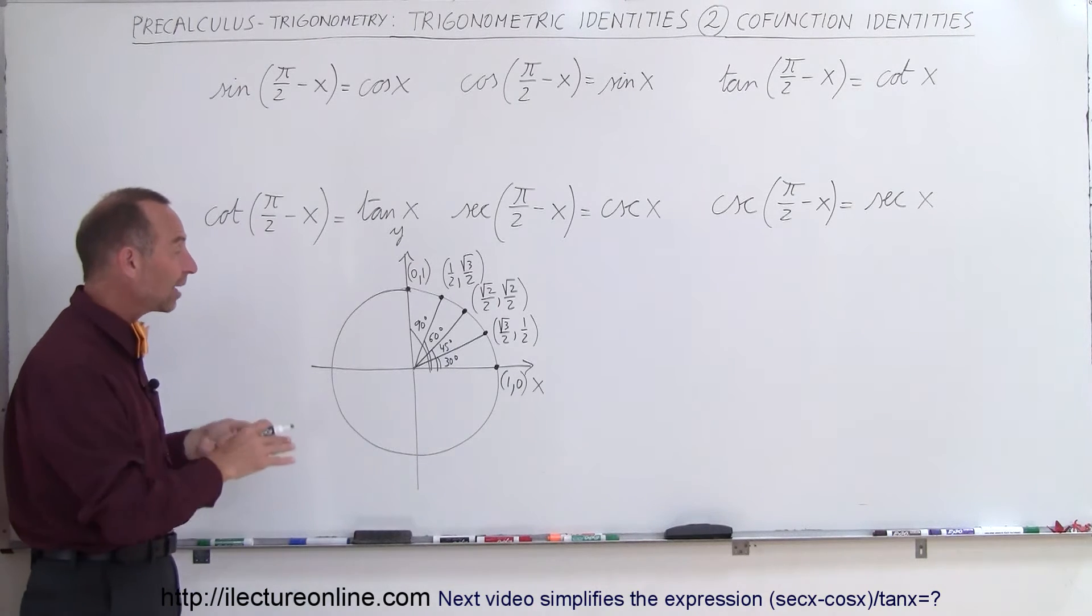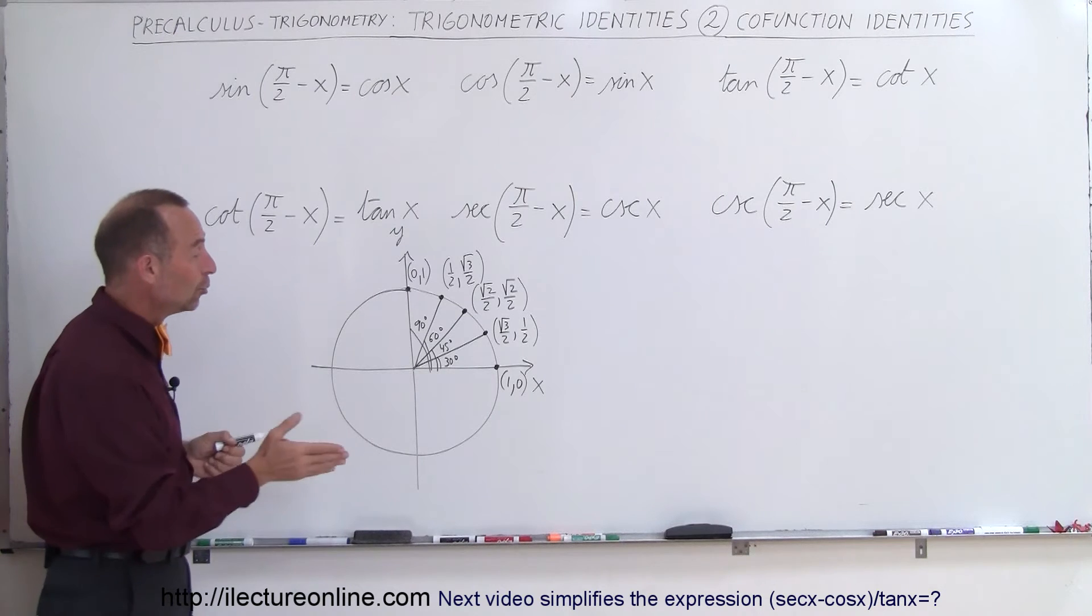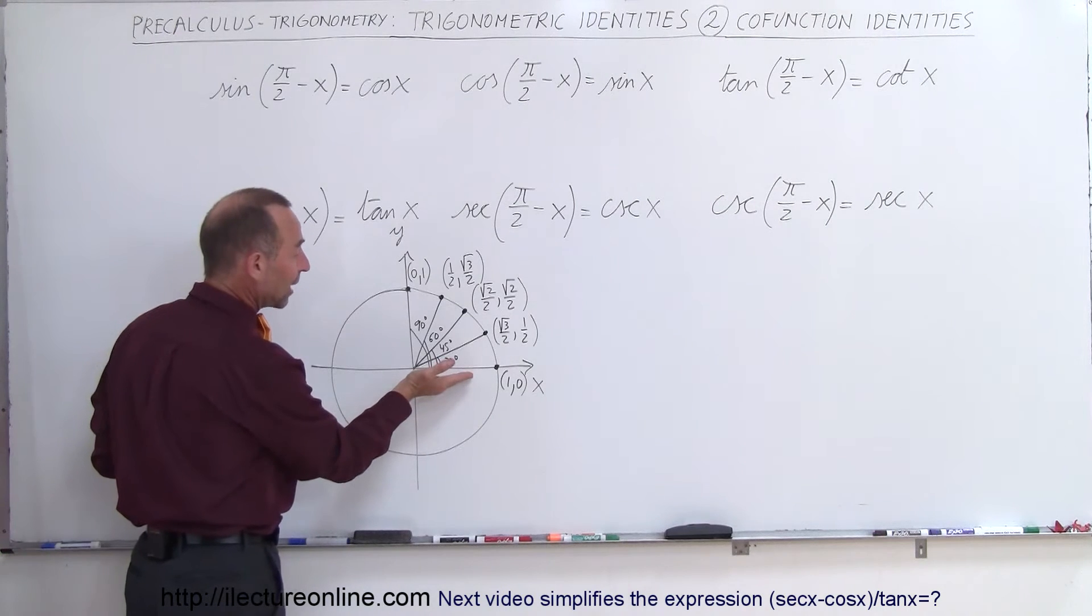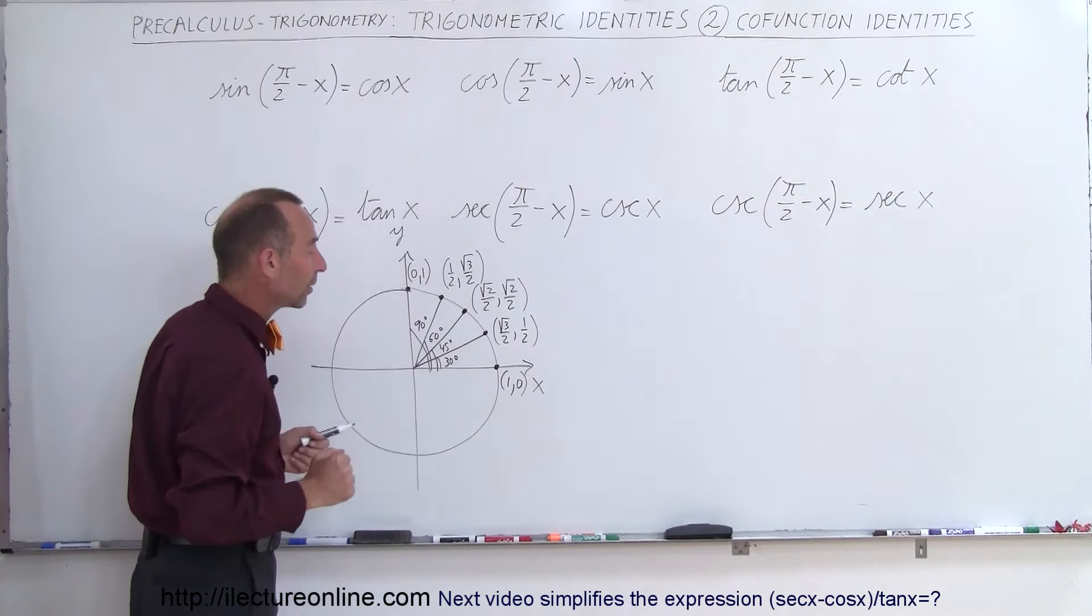But just to kind of get a feel for it, let's take a look at the sine and the cosine. Notice we have 0 degree angle, 30 degree, 45, 60, and 90 degree angles.